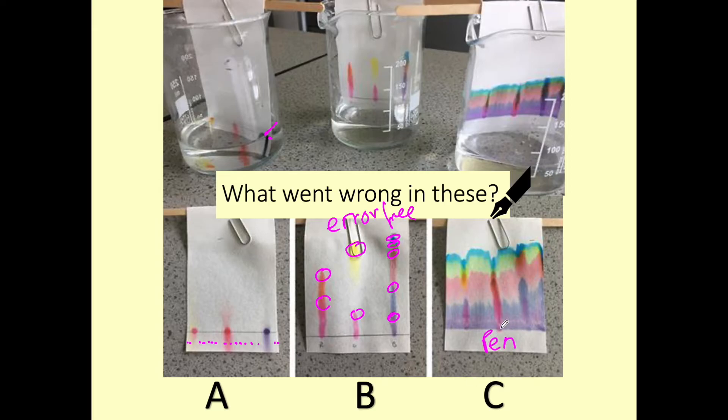So pen is soluble in water. And so the mixture of inks that are in our pen, they get dissolved and travel up the paper. So this is why we should use pencil, because pencil is insoluble in water and therefore won't travel up the paper.